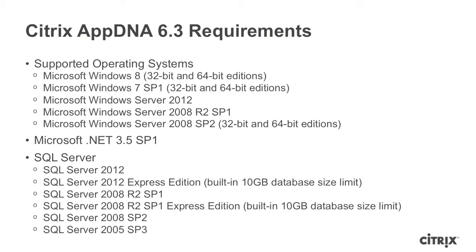AppDNA 6.3 can be installed on the following client and server operating systems. In an evaluation capacity, we can install AppDNA on any of them. I used Windows 7 for this video. However, in a real-world scenario, depending on the expected number of applications that will be evaluated, choose the server operating systems, preferably the 64-bit ones, to maximize the computer's resources.